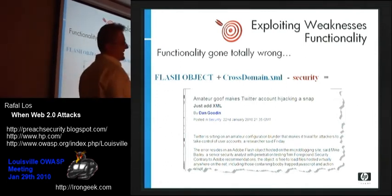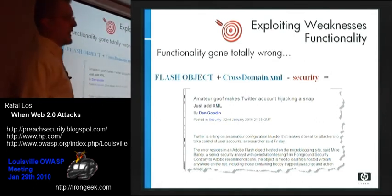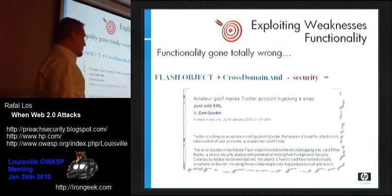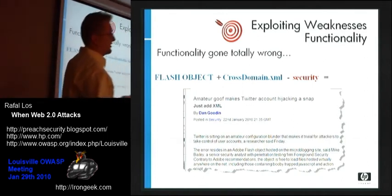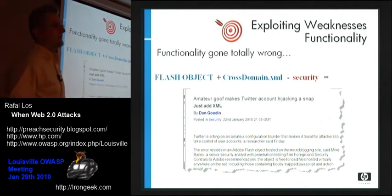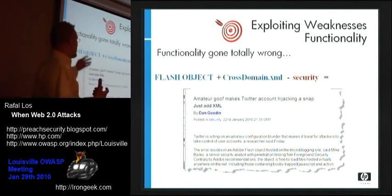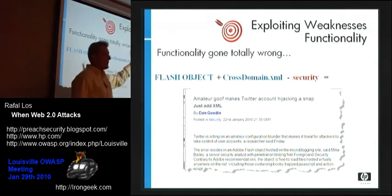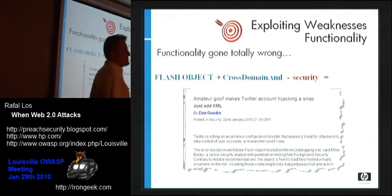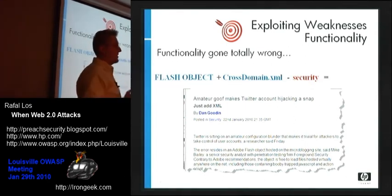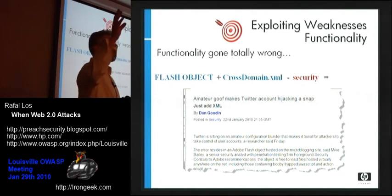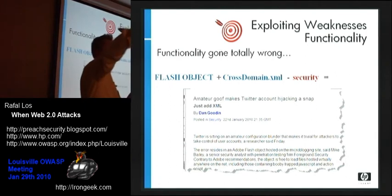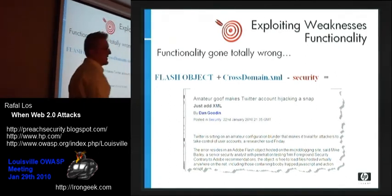Dan wrote this up and the headline says: 'Amateur goof makes Twitter account hijacking a snap.' Go read the details, but basically it deals with tricking — downloading one of Twitter's SWF files, repurposing it, hosting it on your own machine, building it across the domain. A cross-domain.xml file in Flash says any time that Flash object requests something from a different site, the file tells it where you're allowed to fetch other objects from. By default, anybody want to guess? Star — a wildcard for everything. Why do you want to make restrictions? Let them be creative. The juice is stupidity.